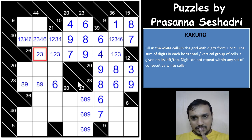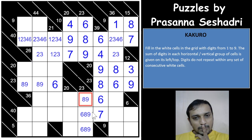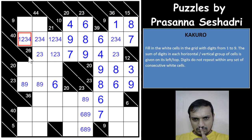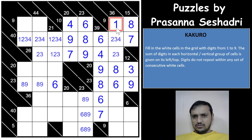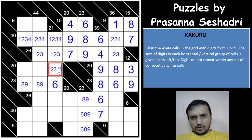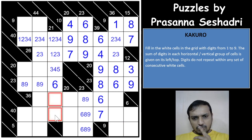For the 44-sum, 1 is already eliminated; 6 cannot be here, here, here, or here. We now have a 2-3 pair with 1 eliminated from these cells, and both 5 and 7 cannot be here because of the 40-sum — so we have a 2, 3, 4 triplet here. This gives 5 and 7 here, then 2 and 4 elsewhere, forming another 2, 3, 4 triplet.